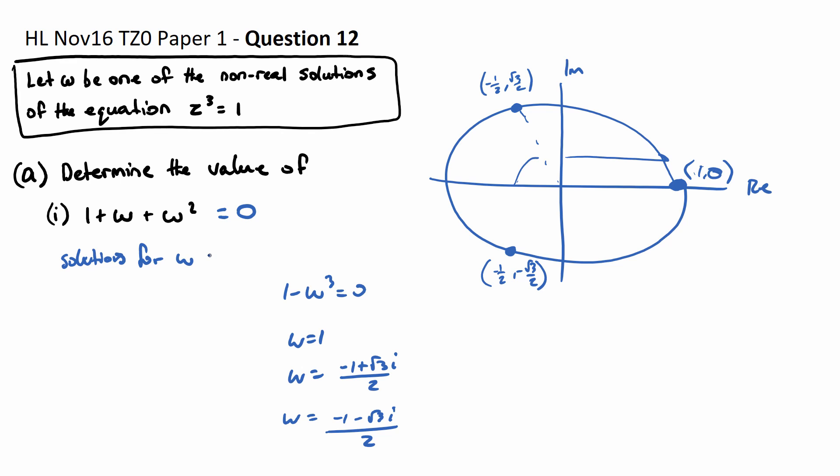W equals 1 or minus 1 plus or minus root 3i on 2, similar to what I have down here.